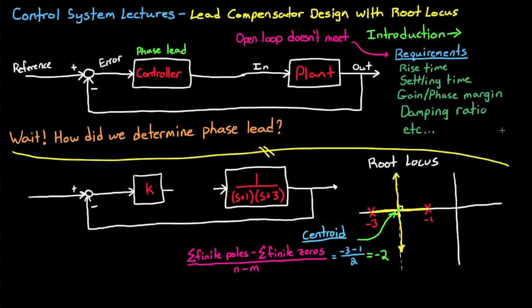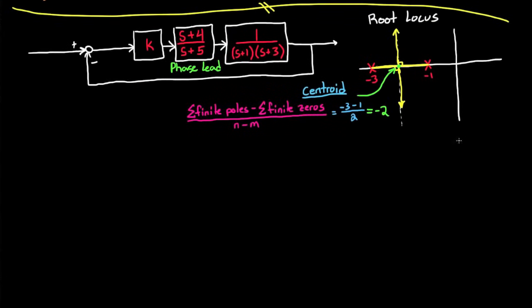But what if we added a phase lead compensator to the system, and we saw how that affected the root locus? And I'll choose s plus 4 over s plus 5. And again, this is just an arbitrary lead compensator. But you can tell it's phase lead because the zero is closer to the origin than the pole. Let me redraw the root locus down here so that it's a little bit cleaner. We still have the two poles from the plant at minus 1 and minus 3, but now we've added a zero at minus 4 and another pole at minus 5.